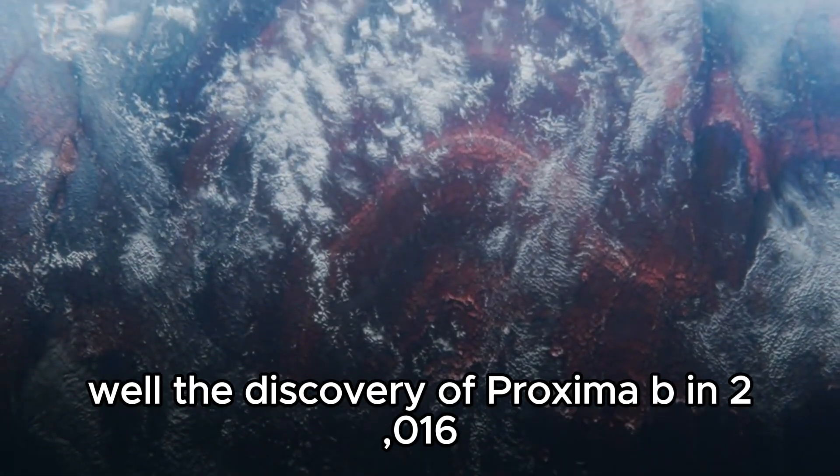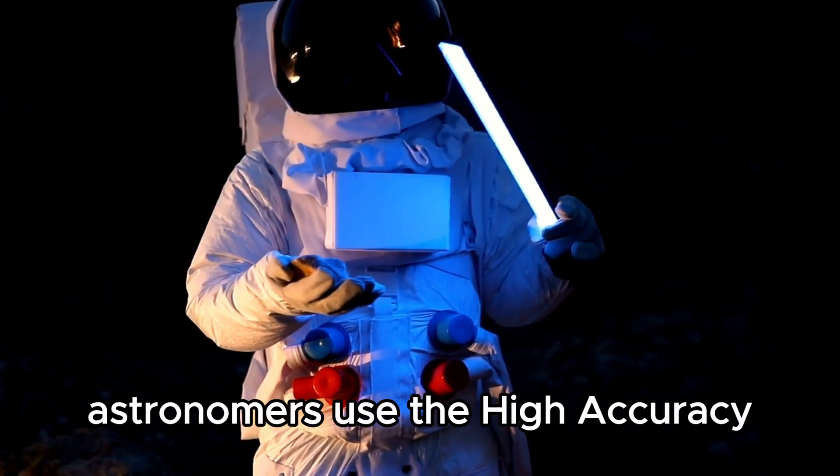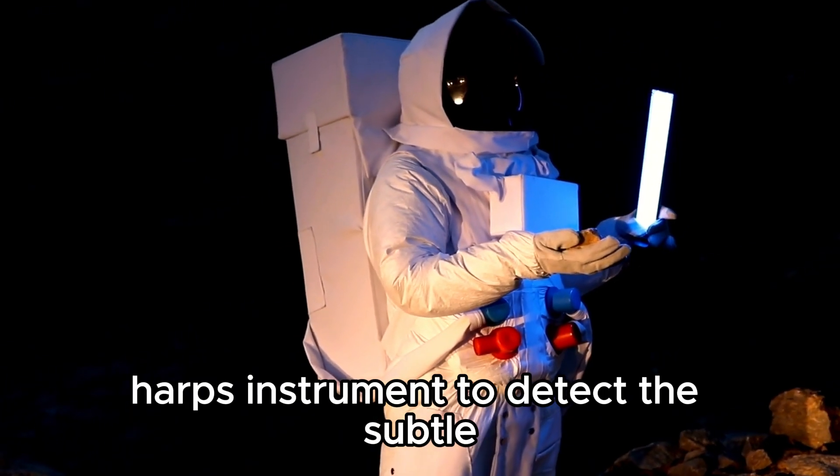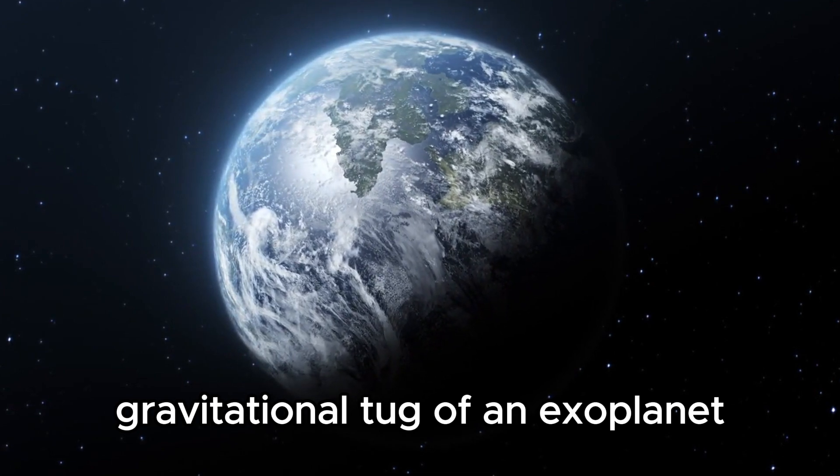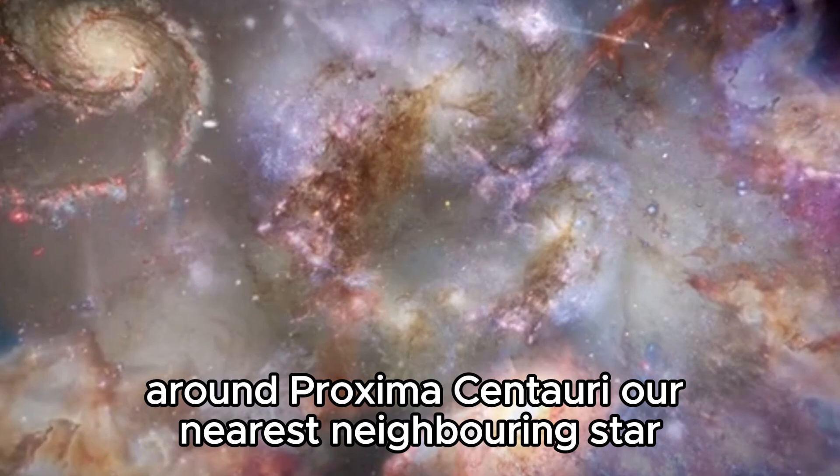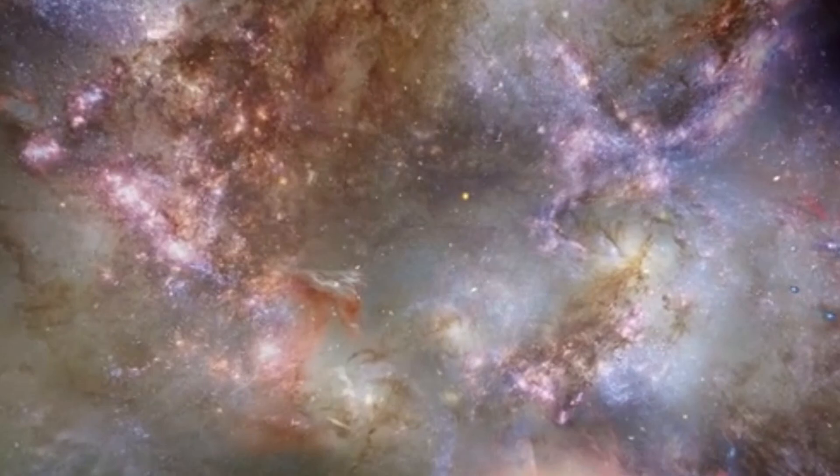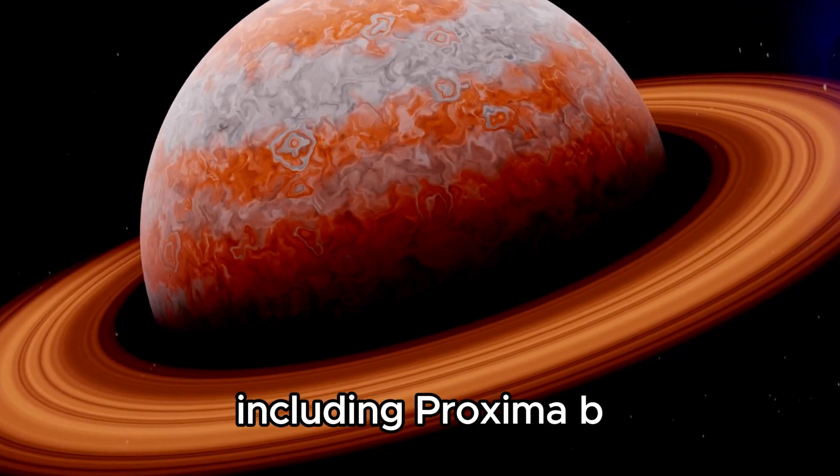Well, the discovery of Proxima b in 2016 was a remarkable achievement. Astronomers used the high-accuracy radial velocity planet searcher, HARPS, instrument to detect the subtle gravitational tug of an exoplanet around Proxima Centauri, our nearest neighboring star. This high-precision spectrograph, operating at the La Silla Observatory in Chile, has been crucial in the discovery of numerous exoplanets, including Proxima b.